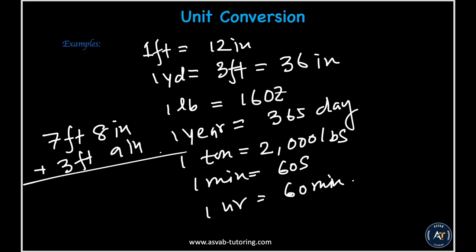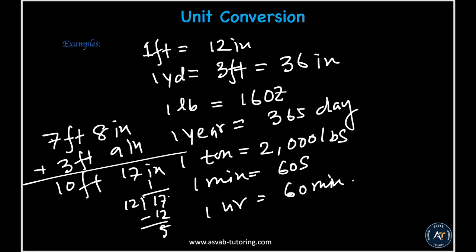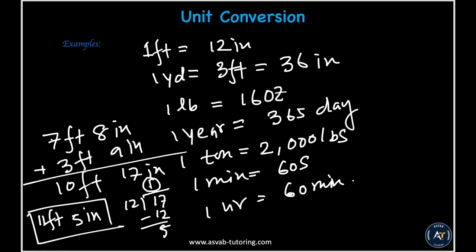Example: add 7 feet 8 inches plus 3 feet 9 inches. Add the inches: 8 plus 9 is 17 inches. Add the feet: 7 plus 3 is 10 feet. Since 17 inches exceeds 12, convert: 17 divided by 12 gives 1 foot remainder 5 inches. Add the extra foot to 10 feet: the answer is 11 feet 5 inches.